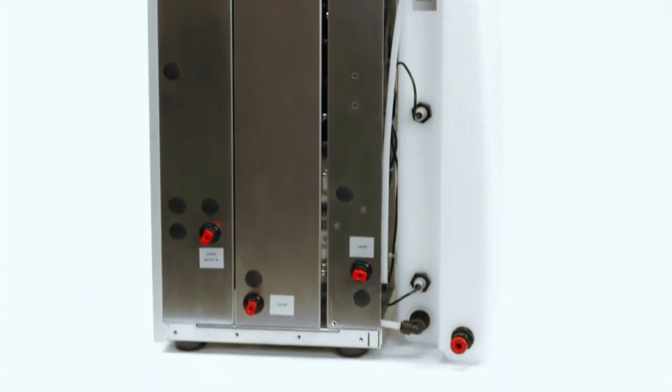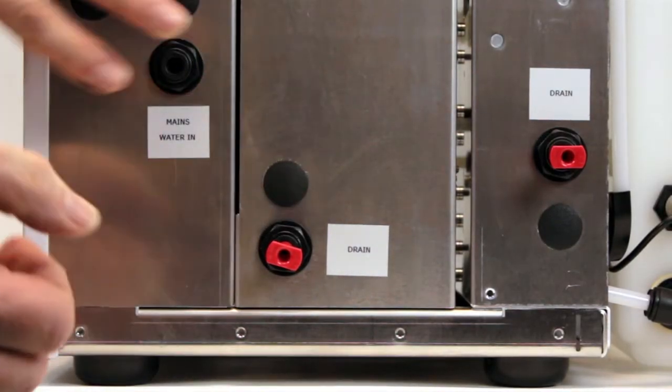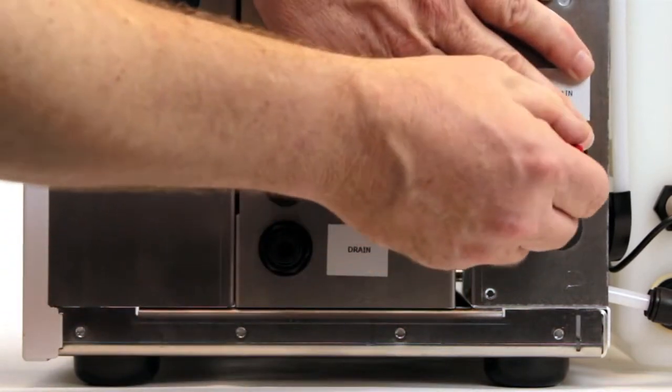All feed water, drain, and overflow connections are on the rear of the unit. First, remove all of the red transit plugs by simply depressing the locking ring and pulling them out.